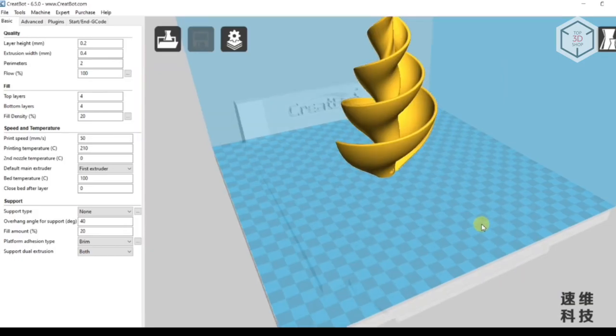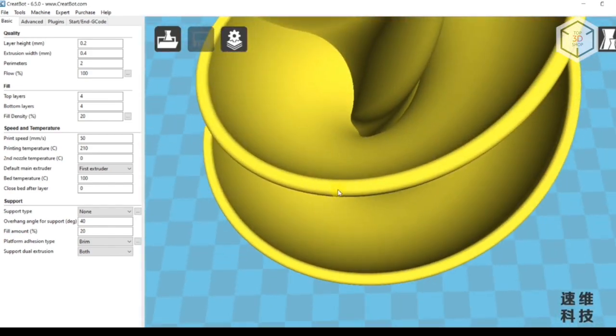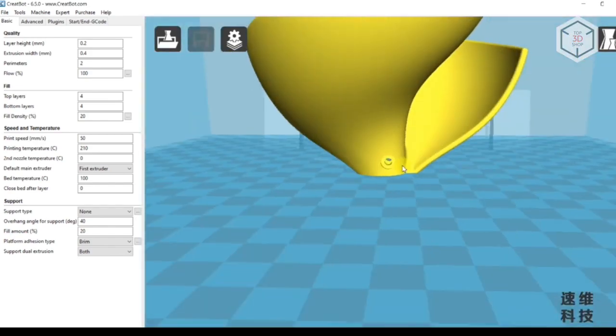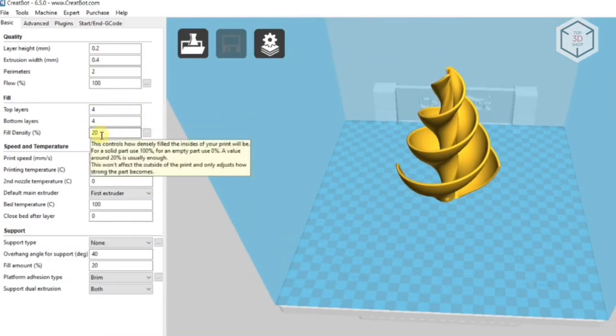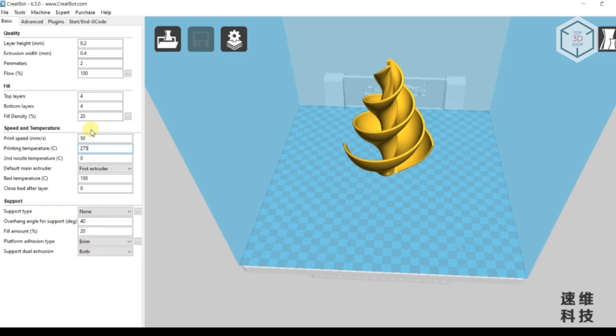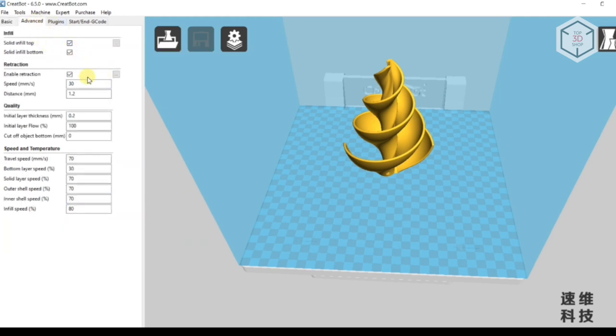We used a model from the Thingiverse website for our first test print. There's a small hole at the bottom. Let's check how it will turn out without supports. We set 20% infill. Since we're running Formax filament, we'll set the nozzle temperature to 275 degrees and the bed temperature to 110 degrees. In this case, we won't be using any support structures, but we'll leave the brim in order to avoid adhesion issues since the area of contact between the model and the build platform is quite small.